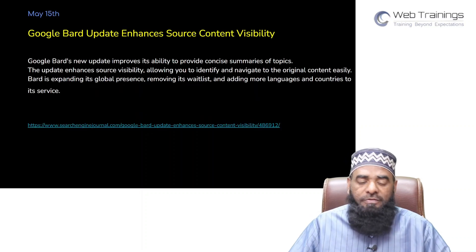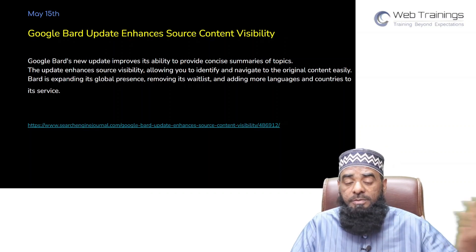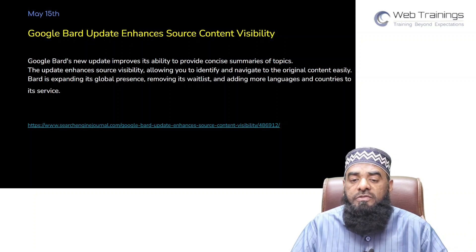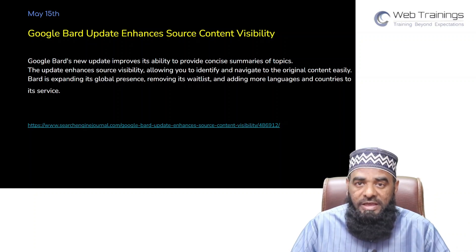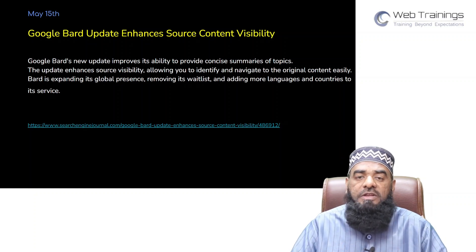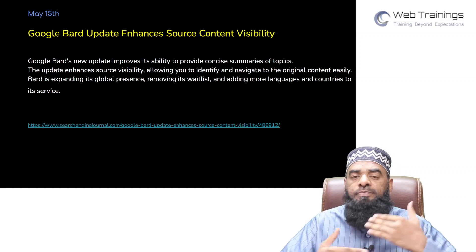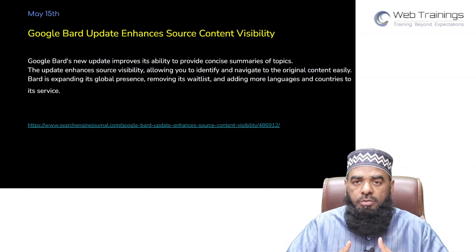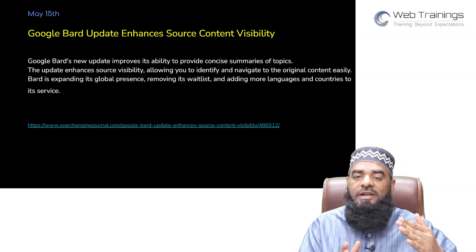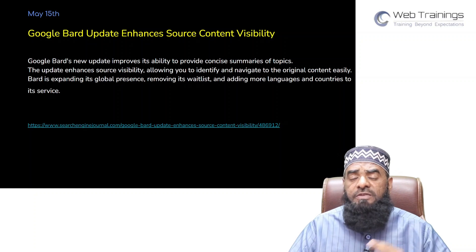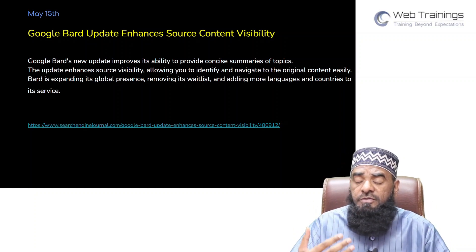The first update, on May 15th after the previous week's update, is that Google Bard has updated a few things in their AI system. One feature they have added is the ability to summarize topics — whatever topics we add into Bard, we get details, and Bard can now summarize that in a much easier way.